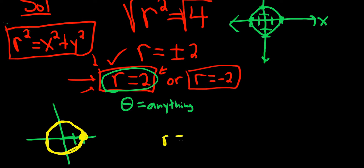For example, r equals 3 would be a circle centered at the origin of radius 3, and r equals 7 would be a circle centered at the origin of radius 7. I hope this video has been helpful. Take care.